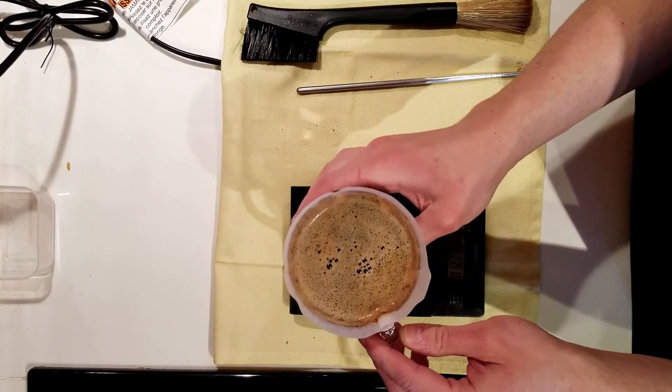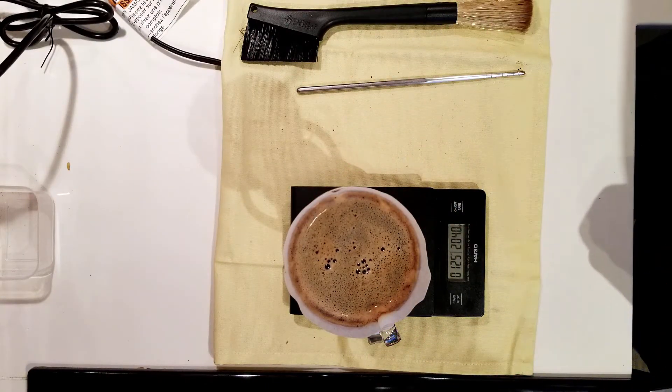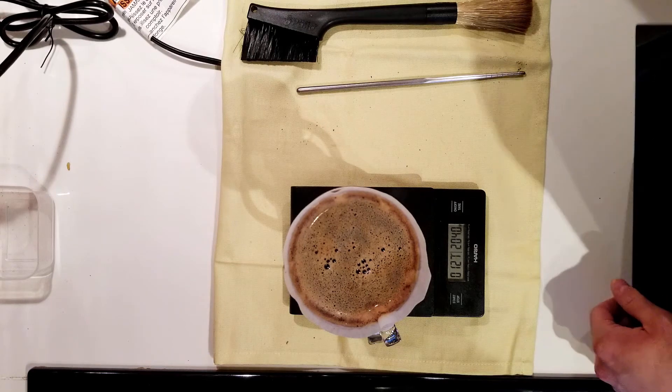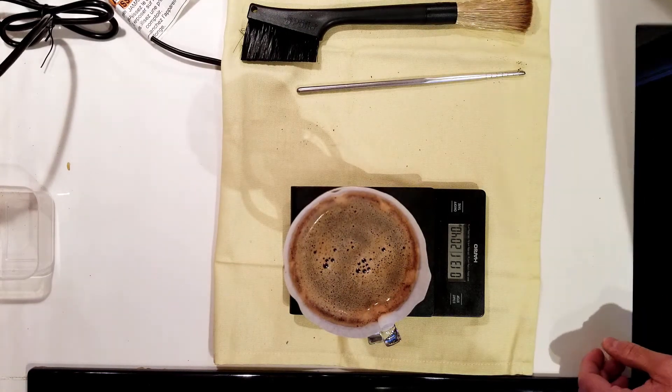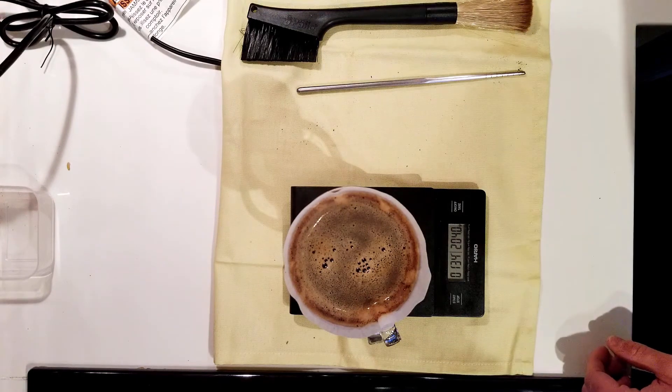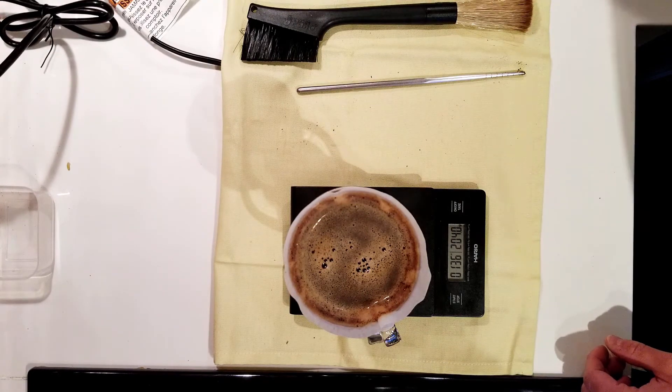Up to 200 grams now, I'll give the V60 a swirl, maybe not as long as the bloom phase but enough to encourage the coffee to move down off the filter. We will let the water draw down until there is about an inch of water left above the coffee.